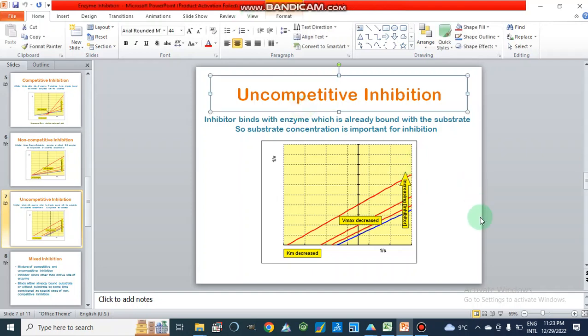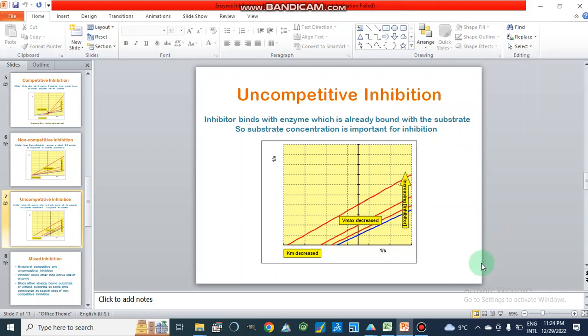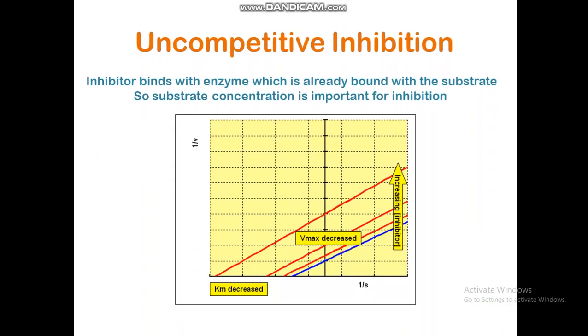Dear students, Assalamu alaikum. Today we will discuss uncompetitive type of enzyme inhibition — how we can plot a double reciprocal plot or Lineweaver-Burk plot for uncompetitive enzyme inhibition, and also how to calculate the inhibition constant, that is the Ki value, for this type of enzyme inhibition.